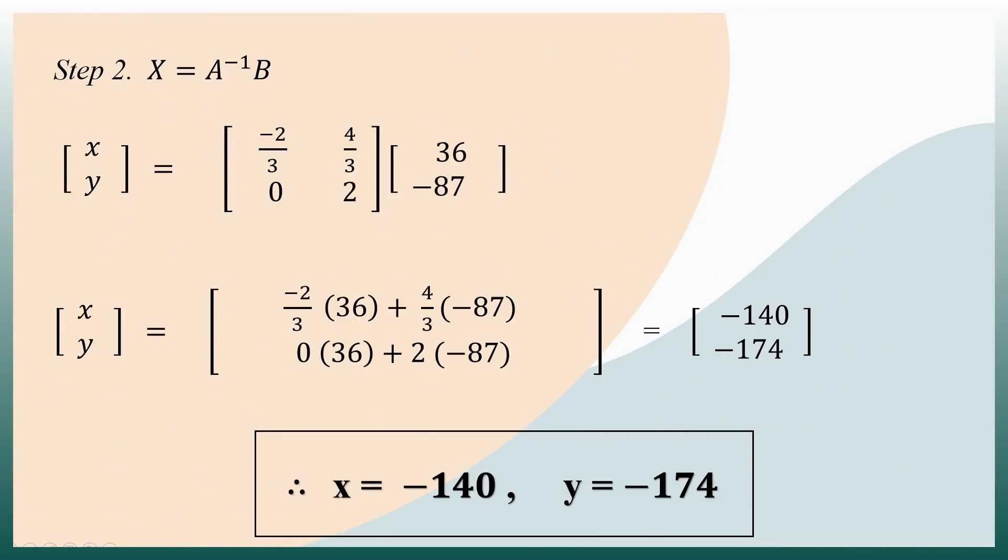Moving on, step 2 is simply multiplying the computed inverse with the matrix of constants. In this step, we will apply basic matrix multiplication, row times column. Negative 2 thirds times 36 plus 4 thirds times negative 87 equals negative 140. 0 times 36 plus 2 times negative 87 equals negative 174. Therefore, the final answers are x equals negative 140 and y equals negative 174.